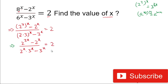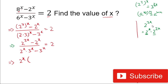Now simplifying the numerator: we take 2 to the power x common. We can split 2 to the power 3x as 2 to the power x multiplied by 2 to the power 2x, since x plus 2x equals 3x. Taking 2 to the power x common, the remaining terms are 2 to the power 2x minus 1.